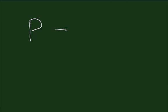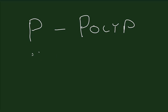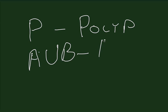An easy way to remember this is just think of a coin of any type in your palm. The first letter P stands for polyp. Polyps are a common cause of abnormal bleeding, so AUB-P would imply that the cause of the abnormal bleeding may be a polyp.